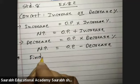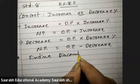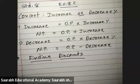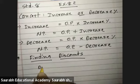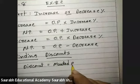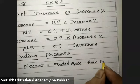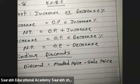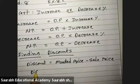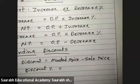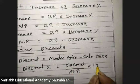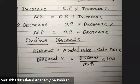Finding Discount. Discount is equals to Marked Price minus Sale Price. And Discount Percentage is equals to Discount upon Marked Price into 100.